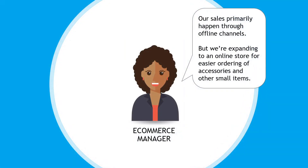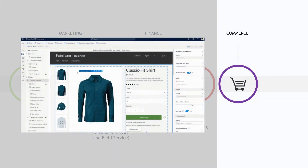Moving on in our cast of characters, we have an e-commerce manager who says: our sales primarily happen through offline channels, but we're expanding to an online store for easier ordering of accessories and other small items. The Commerce app is used to manage the end-to-end retail experience — everything from merchandising, managing different sales channels, the mobile experience, and so on. The company can even sell shirts to their anesthesiologists.